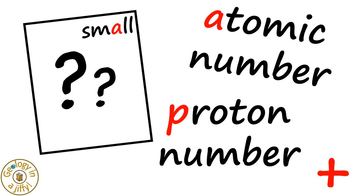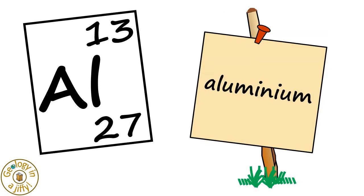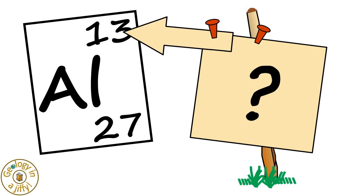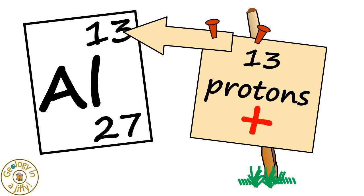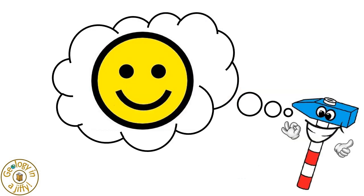They are the same thing. For example, AL is aluminium, the small number being 13, so meaning there are 13 protons in the nucleus. How easy!